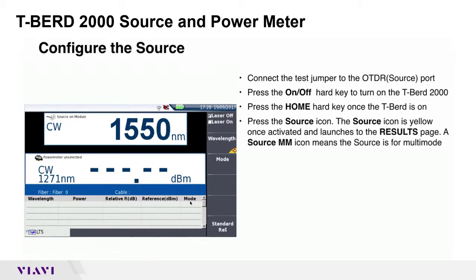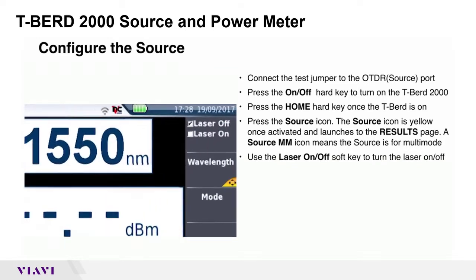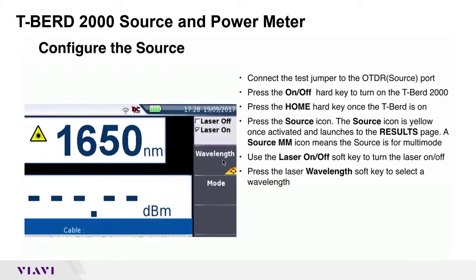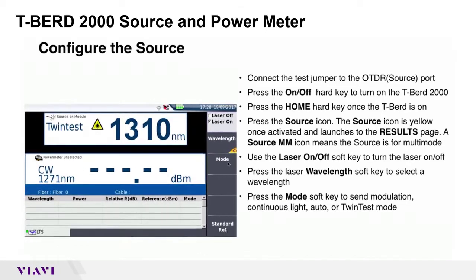A source MM icon means the source is set for multi-mode. Use the Laser ON-OFF soft key to turn the laser ON or OFF. Press the Laser Wavelength soft key to select a wavelength. Press the Mode soft key to send modulation, continuous light, auto, or twin test mode.